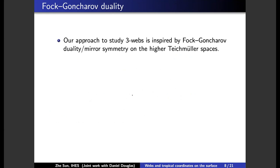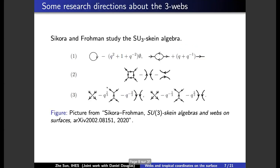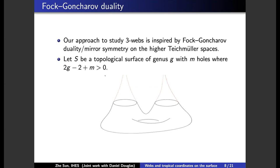So our approach to study the 3-webs is actually inspired by Fock and Goncharov duality and the so-called mirror symmetry on higher Teichmüller space. So without knowing all this abstract work, I prefer to use pictures to show what it means. So firstly, I'll give you a topological surface, this picture on the bottom. So this is a 3-punctured torus.